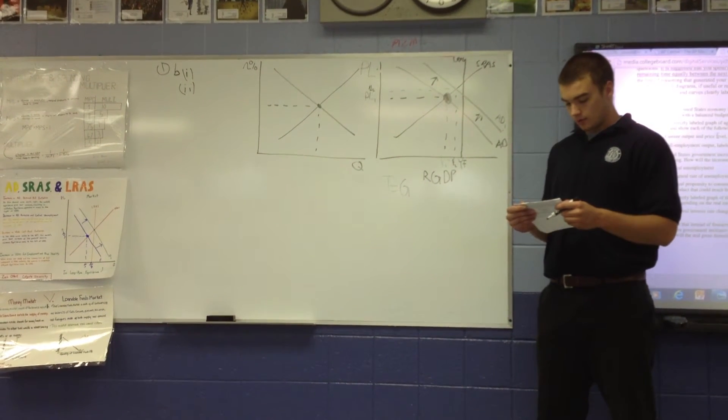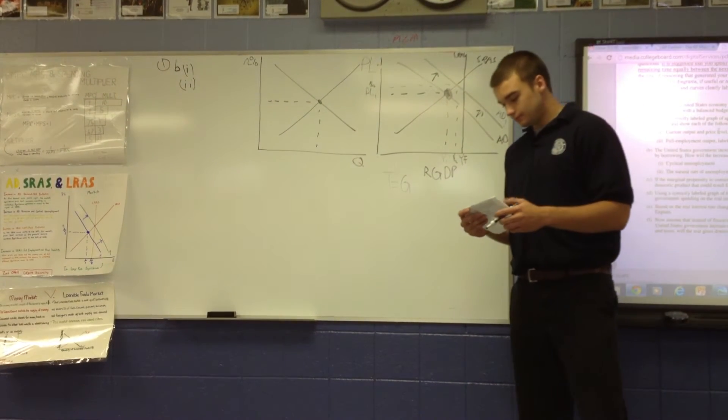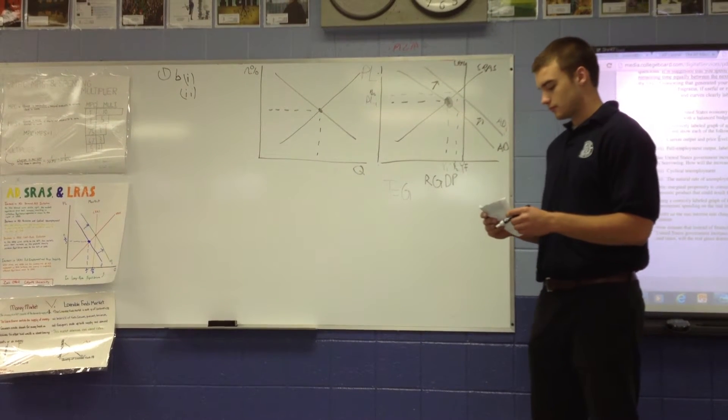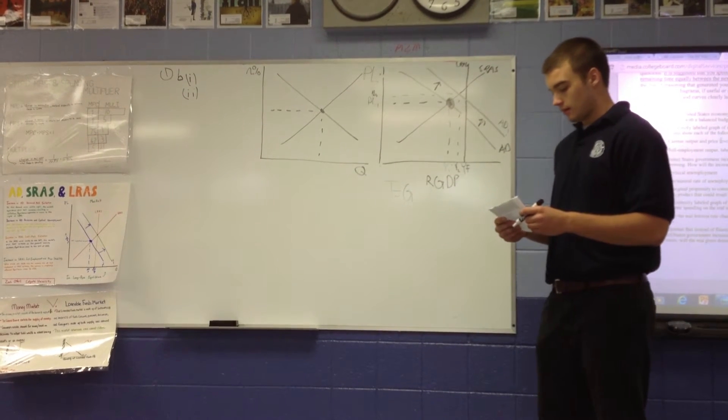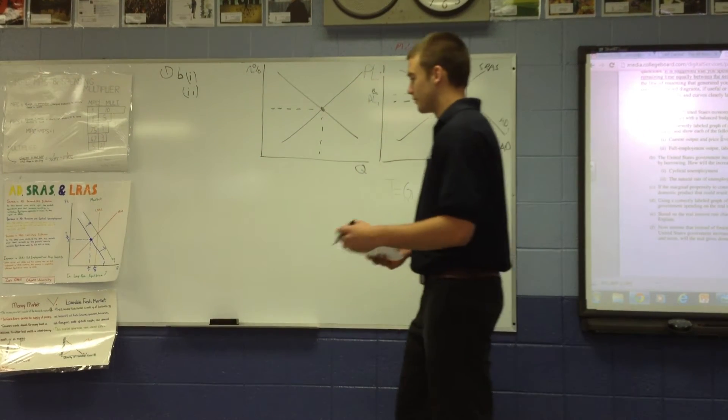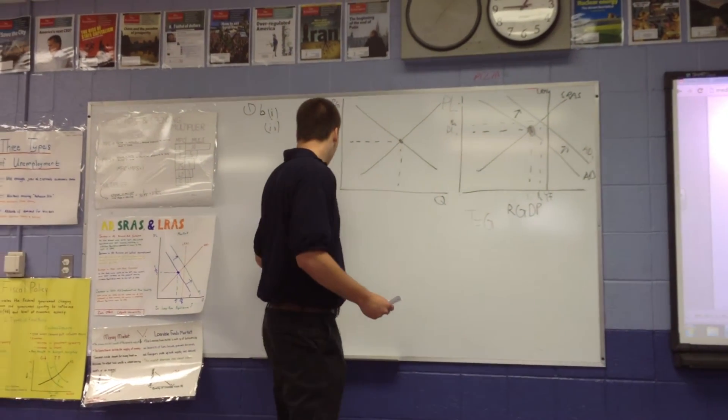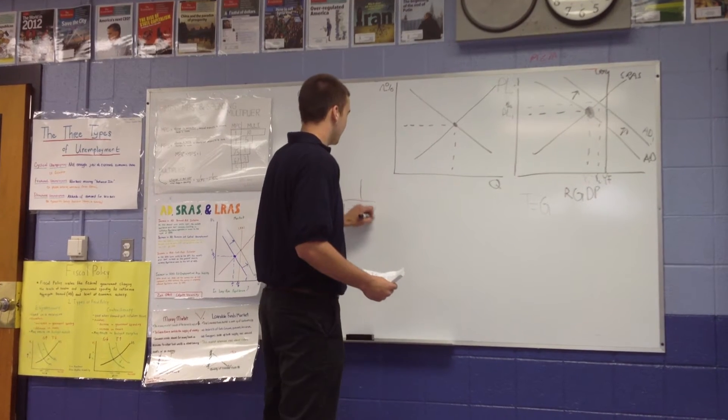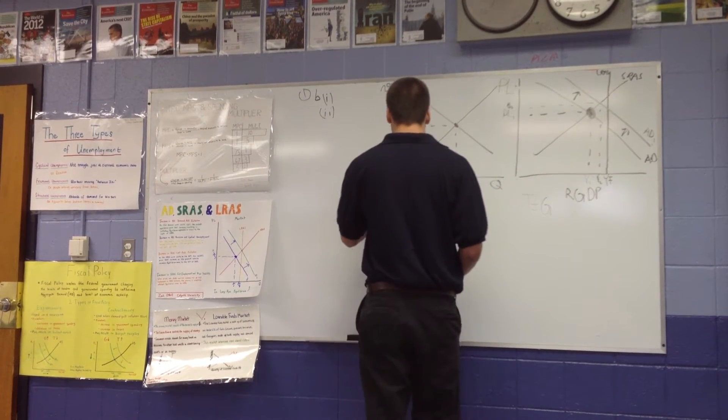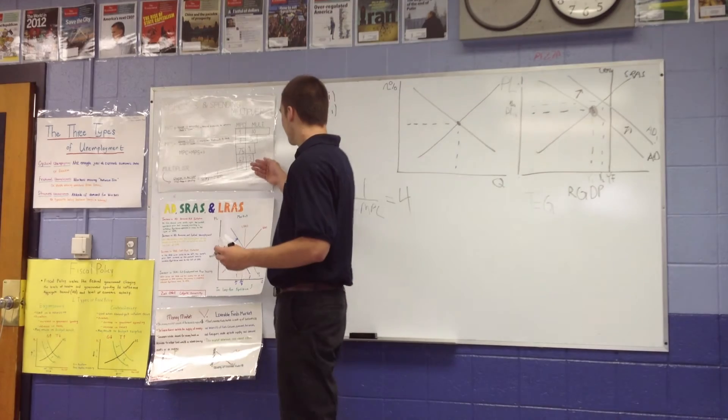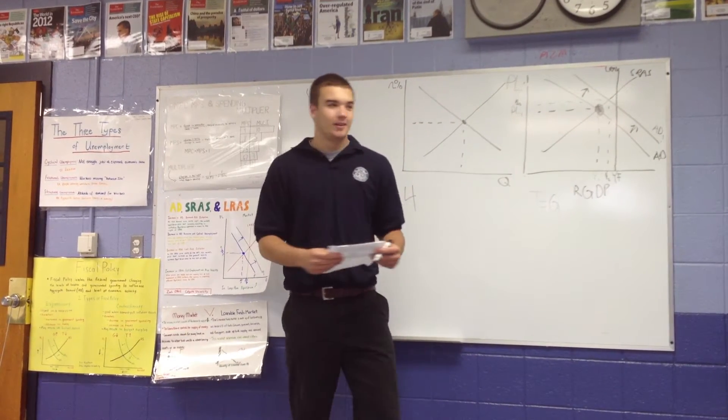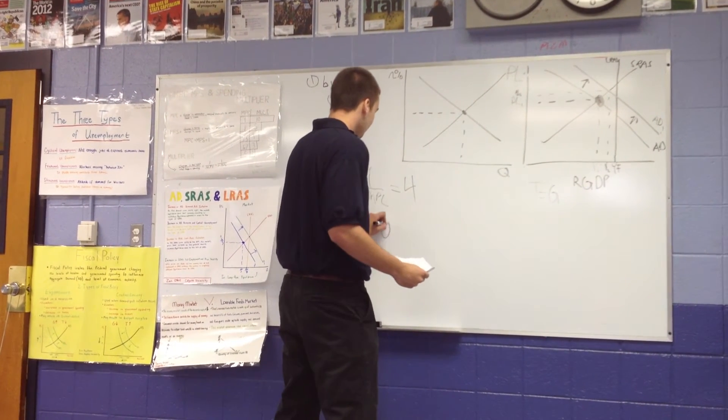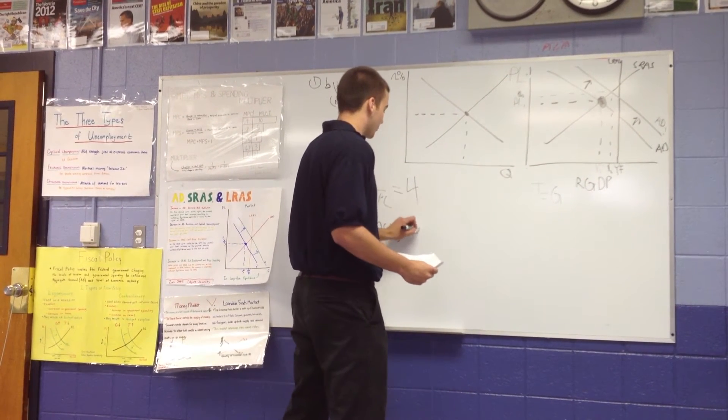Part C. If the marginal propensity to consume is equal to 0.75, calculate the maximum possible change in real gross domestic product that could result from the $100 billion increase in government spending. So if you find the multiplier, you have to find MPS. That was 1 minus MPC equals the multiplier. So, the multiplier was 4. Since government spending increases by $100 billion, you times that by 4, and you'll get an increase in the GDP of $400 billion.